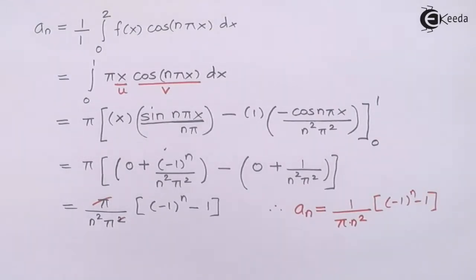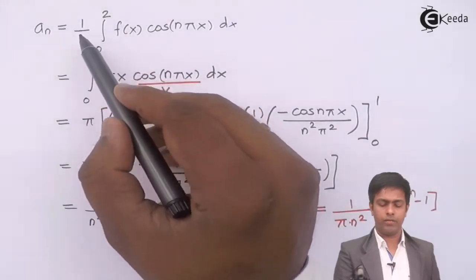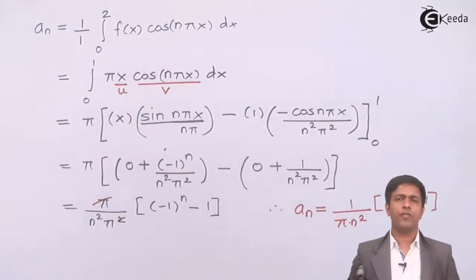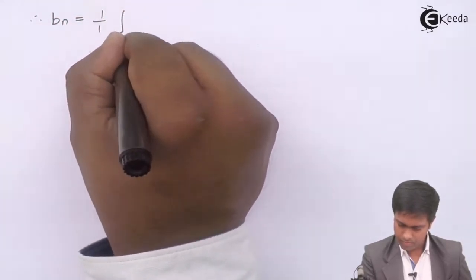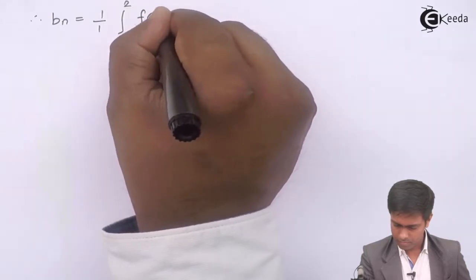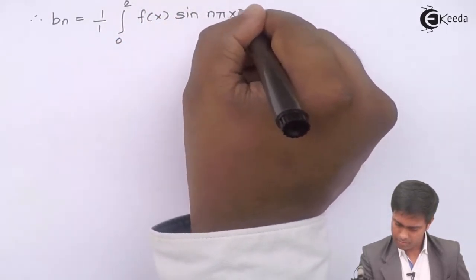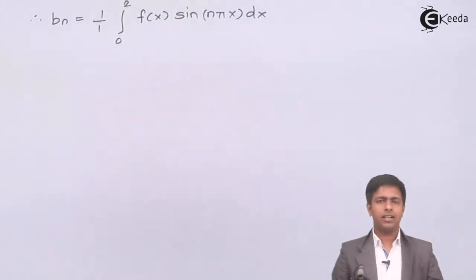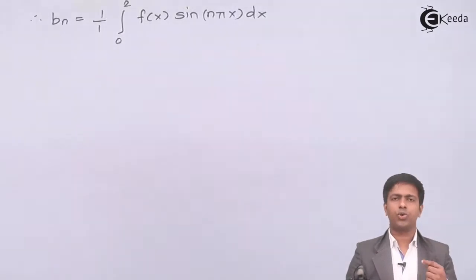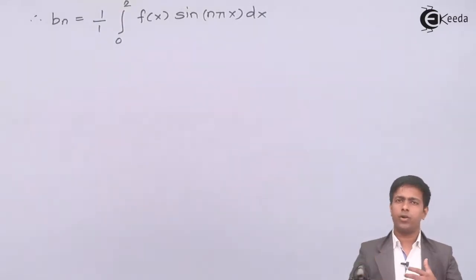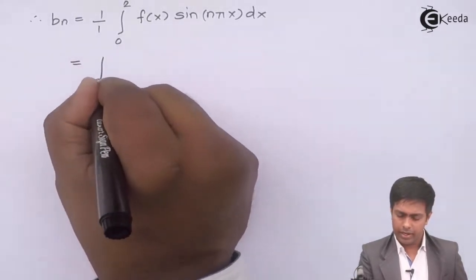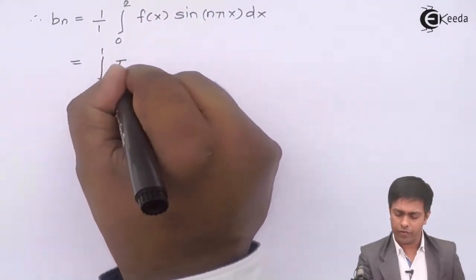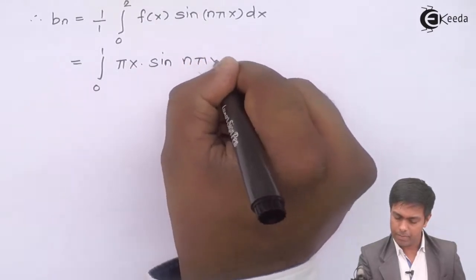Now we find b_n. The formula is (1/l) * integral from 0 to 2l of f(x) * sin(n*pi*x) dx. Again, since f(x) = 0 for x in (1, 2), we only consider the range 0 to 1. This becomes: integral from 0 to 1 of pi*x * sin(n*pi*x) dx.